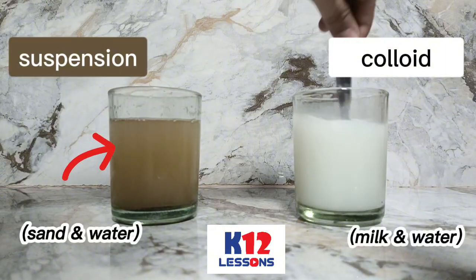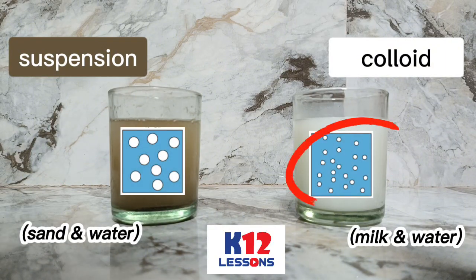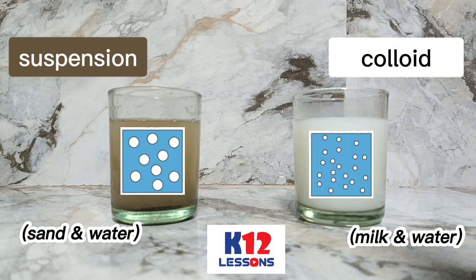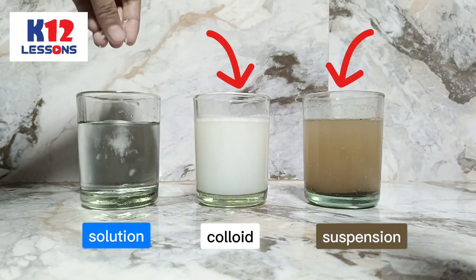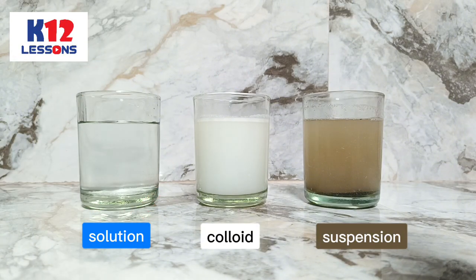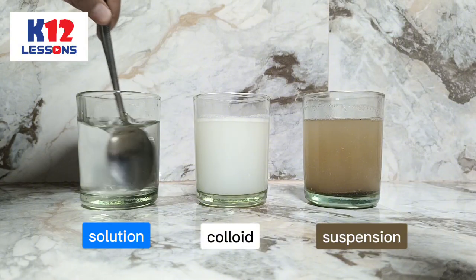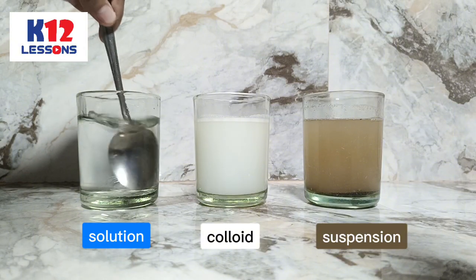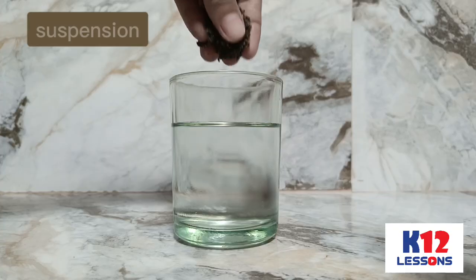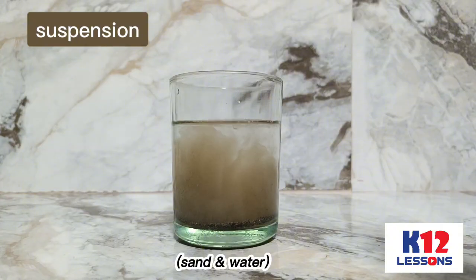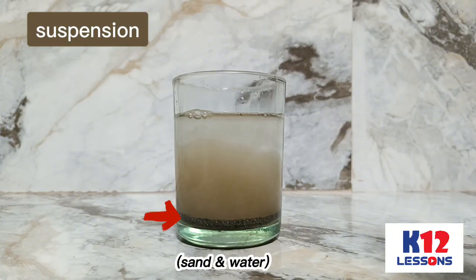This distinguishes a suspension from a colloid, in which the colloid particles are smaller and do not settle. Colloids and suspensions are different from a solution, in which the dissolved substance does not exist as a solid, and solvent and solute are evenly mixed.